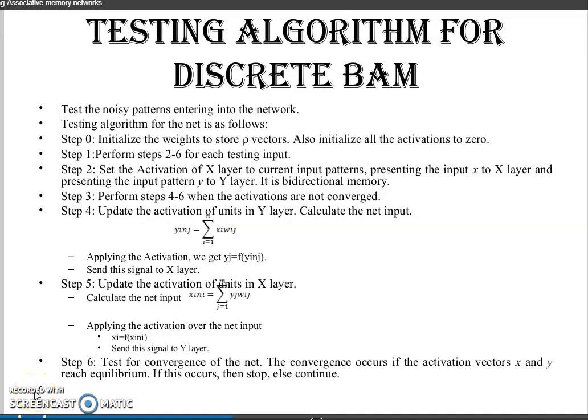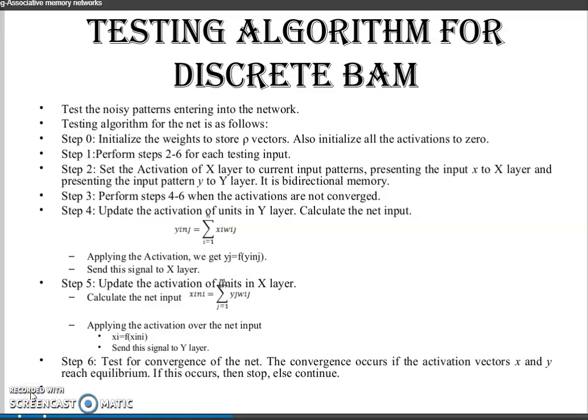Good morning. We will discuss the Discrete BAM Network Testing Algorithm, its architecture and activation function. The Testing Algorithm is used to test the noisy patterns entering into the network. Based on the training algorithm, weights are determined by means of which net input is calculated for the given testing. Then the activation function is applied over it to recognize the test pattern.